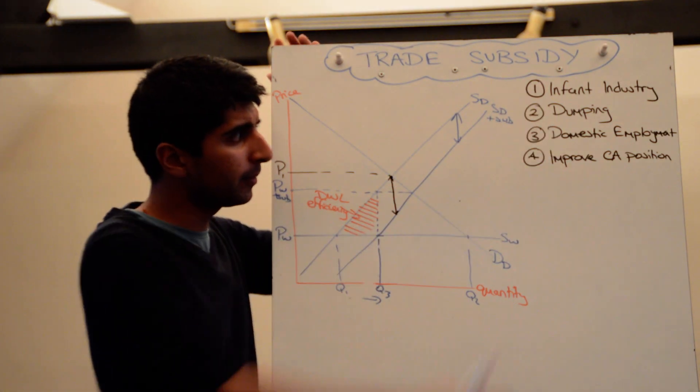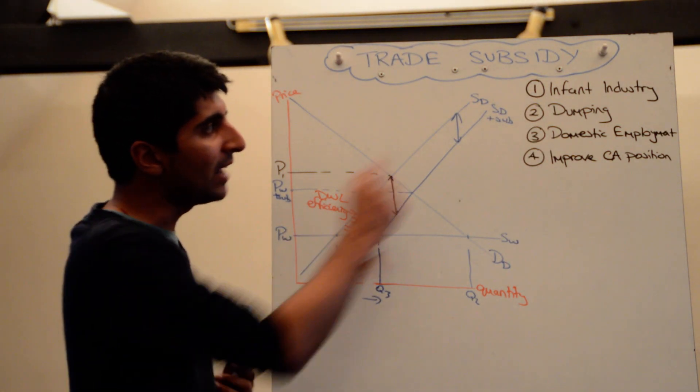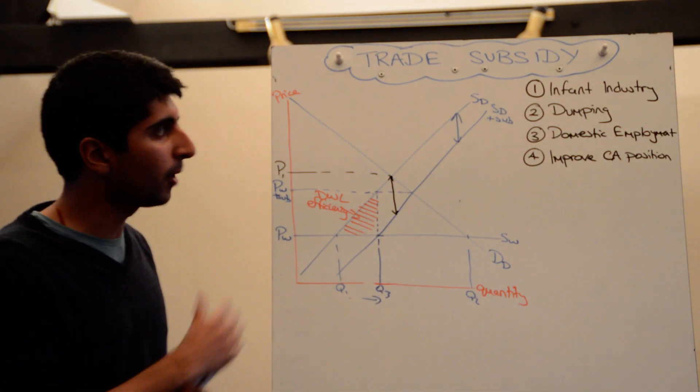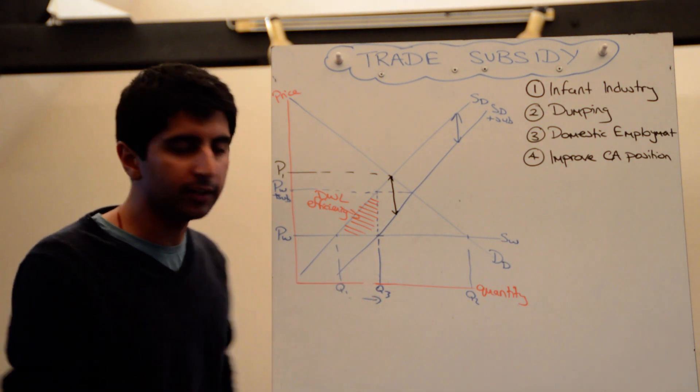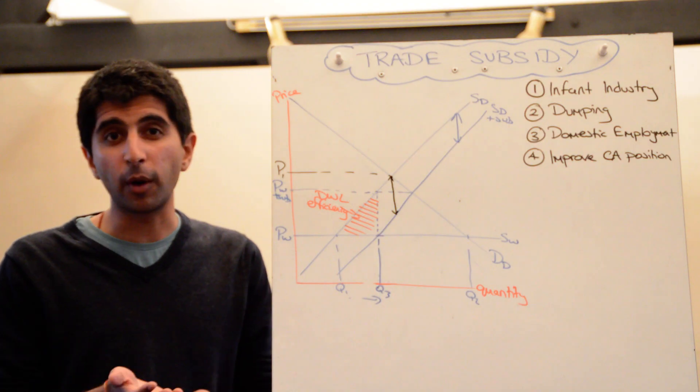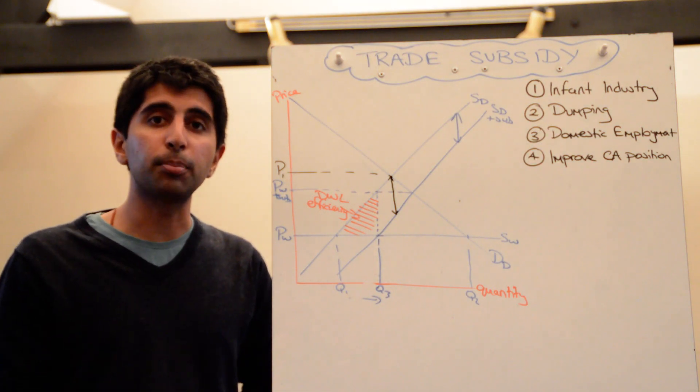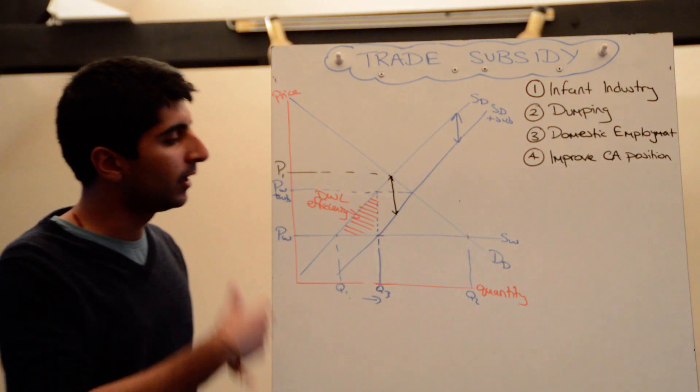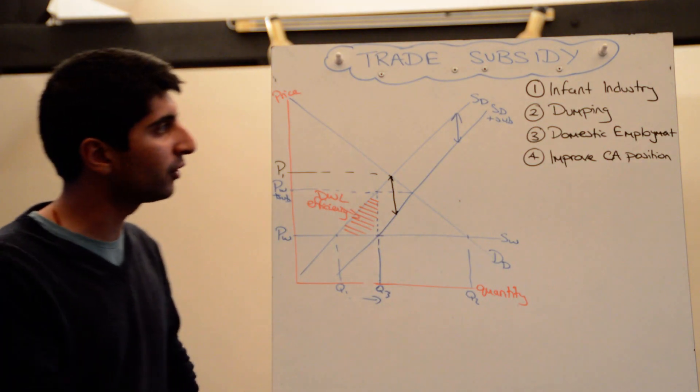When it comes to applying some of these points, you'll see that the infant industry argument for protectionism holds here. There is an increase in domestic supply. So domestic firms are going to grow in size and maybe exploit greater economies of scale to be able to compete with international firms.